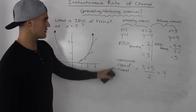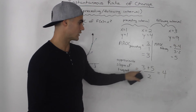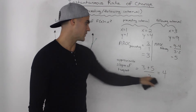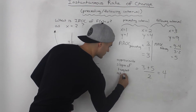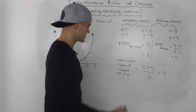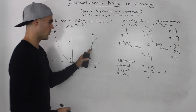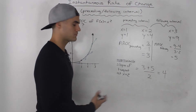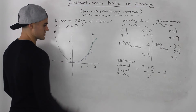To get a better approximation, we average the slope of the secant for the preceding interval and the slope of the secant for the following interval. Adding them and dividing by 2 gives us an approximate slope of the tangent at x = 2 of 4. Notice the word approximate — we don't know whether the slope is exactly 4, but we can be confident it's close to 4.